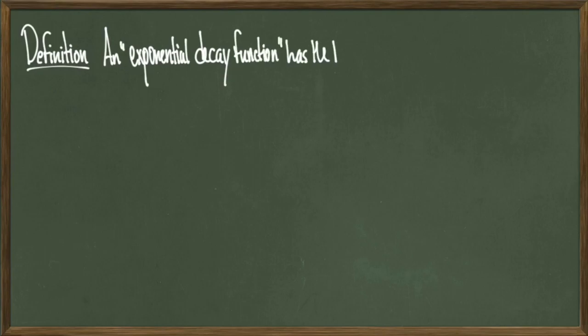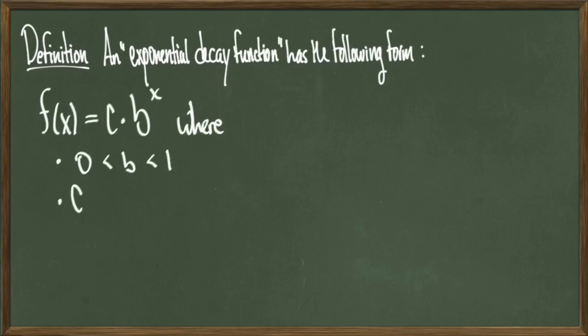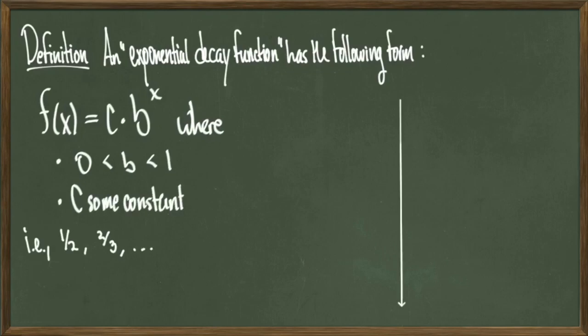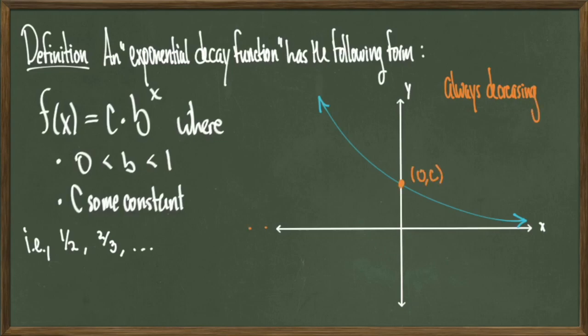For our second case, we'll look at an exponential decay function, which will have the following form: f(x) = c·b^x, however, unlike the previous case, b is a positive number that is smaller than 1, and c is still just some constant. So for a number smaller than 1, I'm talking about fractions like 1/2, 2/3, or maybe even some small irrational number. The graph looks like this. We have this decreasing slope, it'll always be decreasing, and we still have this y-intercept of (0,c). Taking a positive number to the 0 power still gives you an answer of 1.